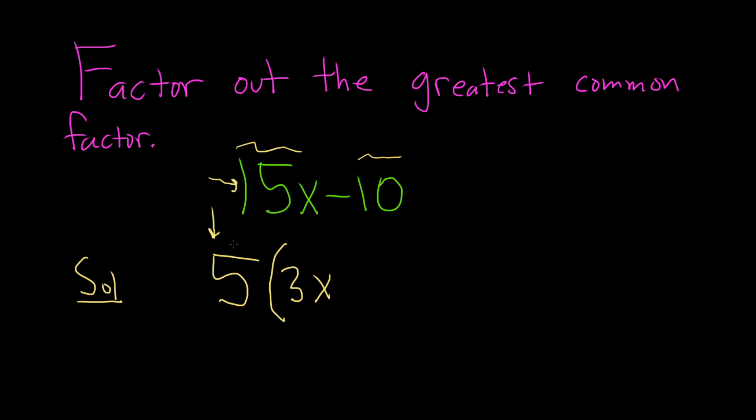Then you ask the question again. What do you multiply by 5 in order to get negative 10? Well, negative 2, and then you write it down. Then again you do a mental check: 5 times negative 2 is equal to negative 10. And that's it.